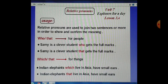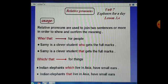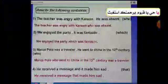For example, number 1. Sammy is a clever student who gets the full marks. We can delete who and write that. Sammy is a clever student that gets the full marks. Which or that for things? Indian elephants which live in Asia have small ears. We can delete which and write that. Indian elephants that live in Asia have small ears.